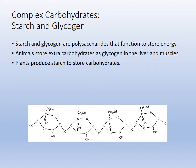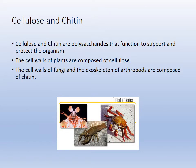Glycogen is how we store energy temporarily, and then that's converted to fats for long-term storage. Chitin is what arthropods use in their exoskeleton, and cellulose makes up cell walls. So these are structural molecules.